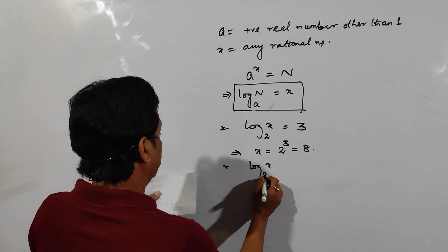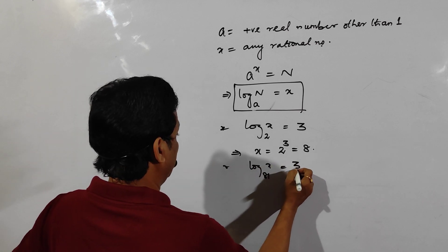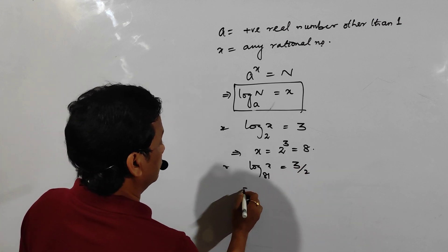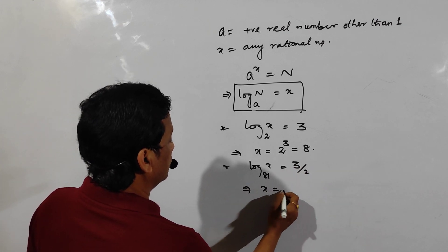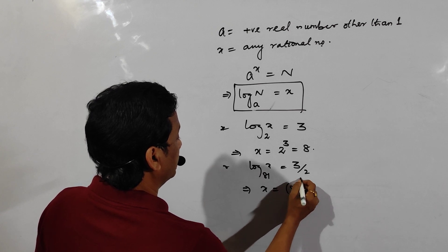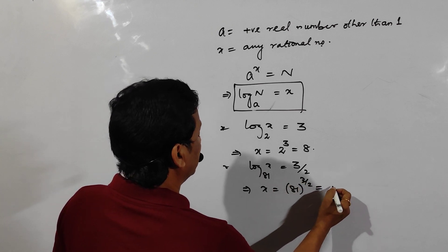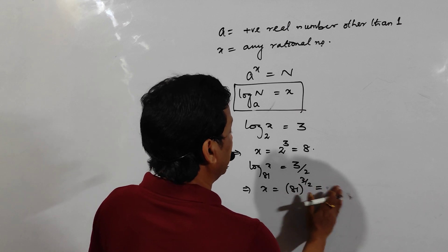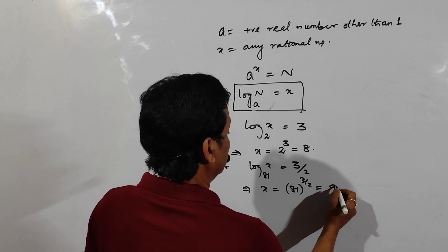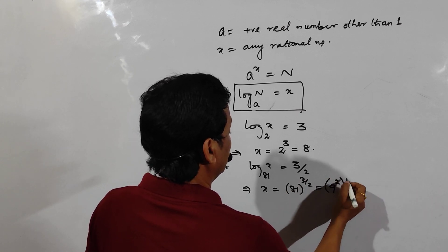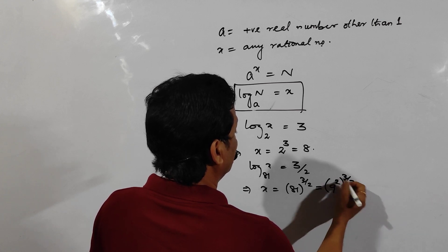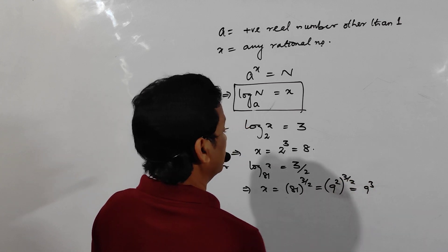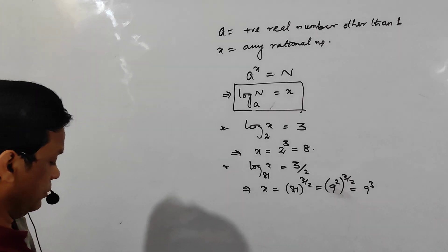Another question: log of x to the base 81 is equal to 3/2. So x = 81^(3/2). Since 81 = 9², we get (9²)^(3/2) = 9^3, and you can find the value from there.